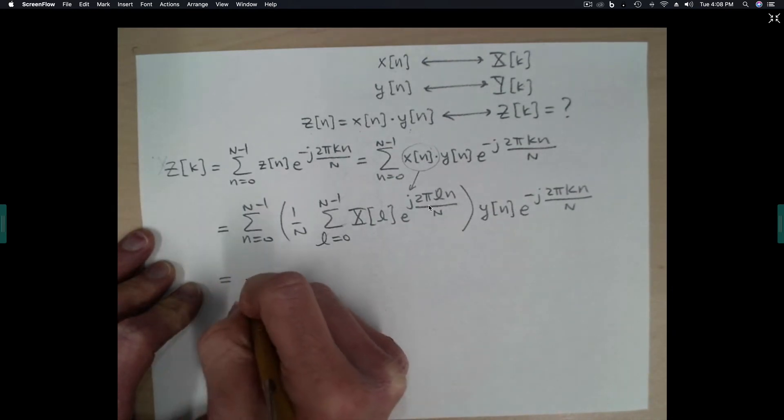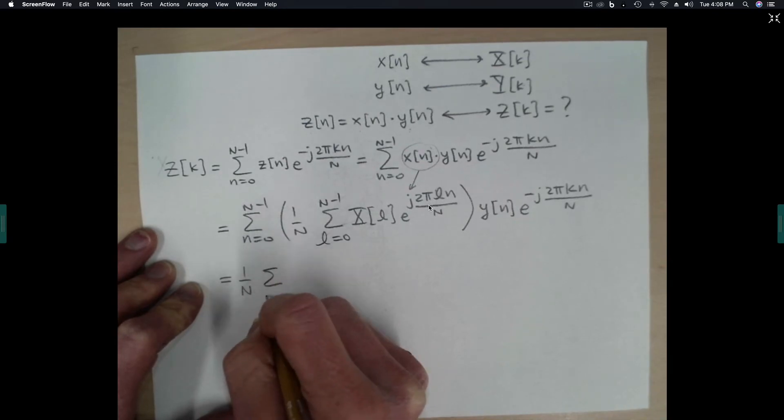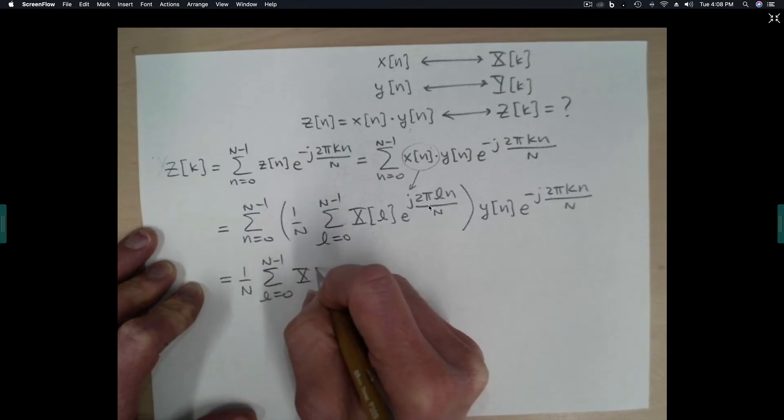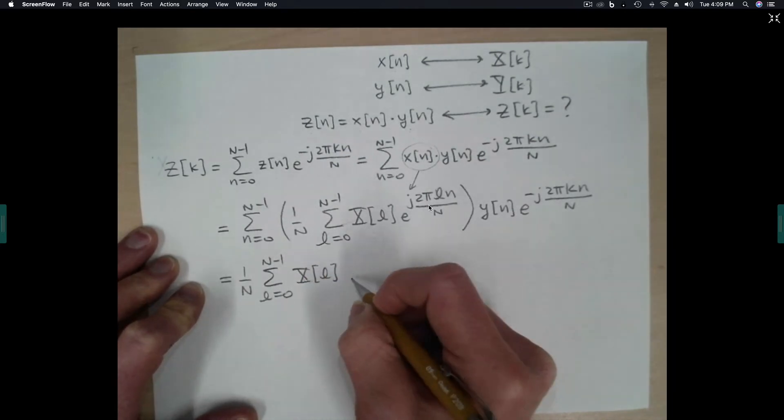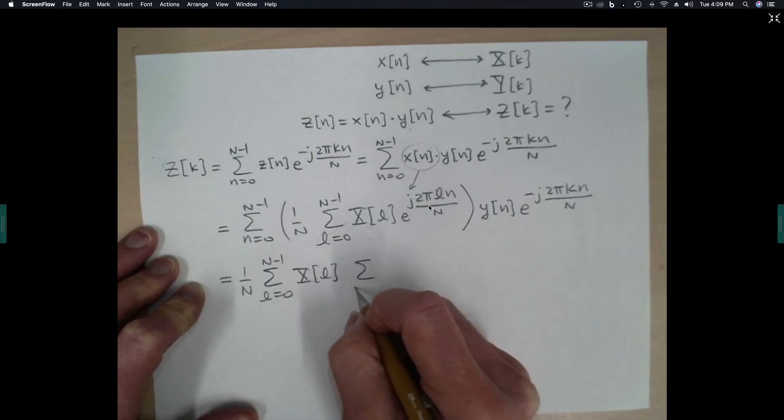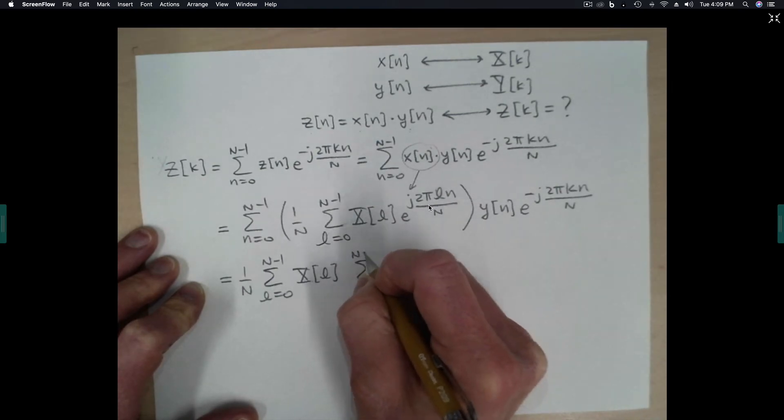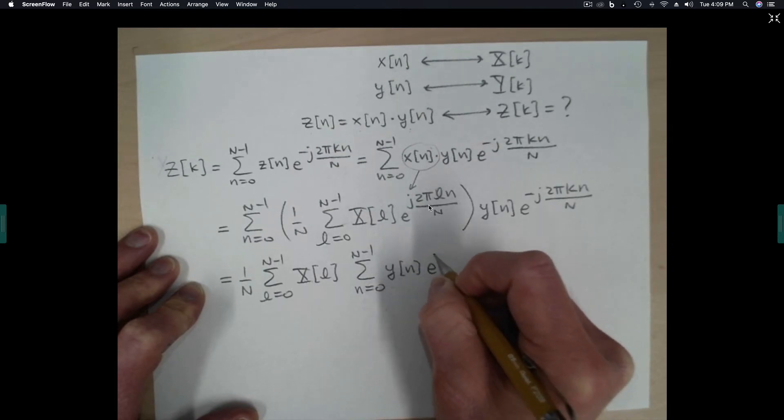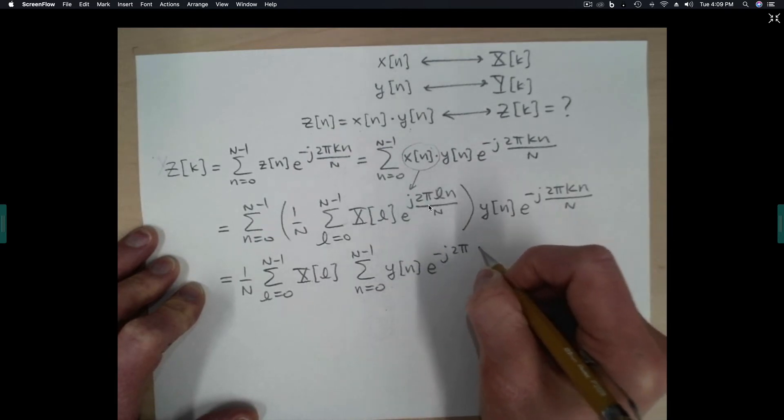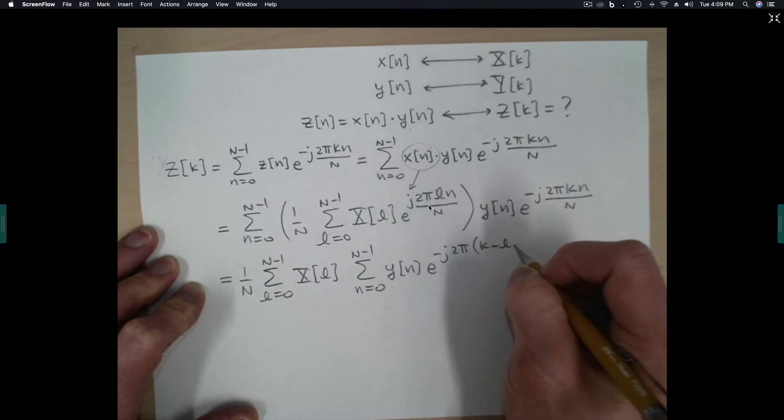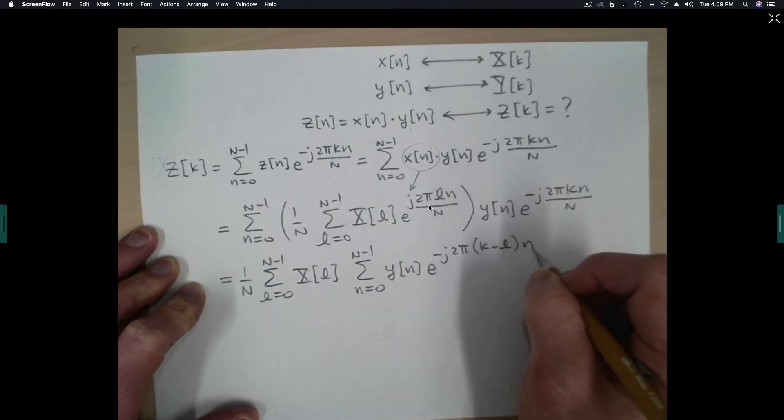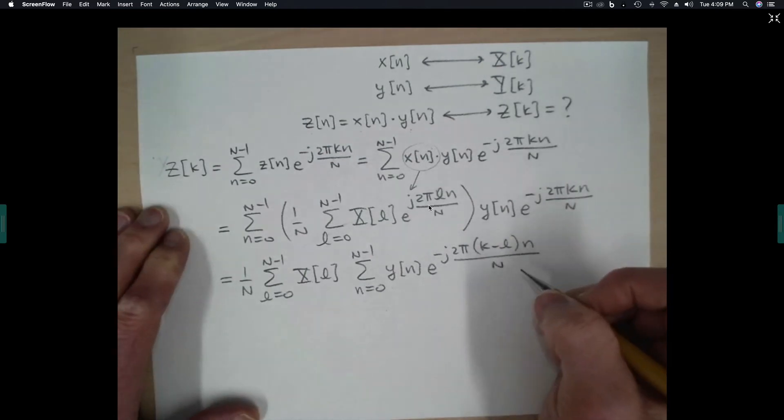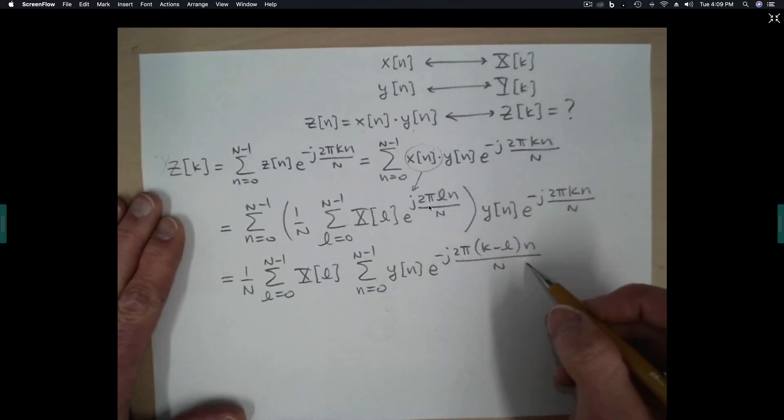Now we're going to interchange the summation, the two summations, and pull out the piece that is only a function of L, which is x(L). Then we have the summation on n, and I've combined the exponentials here.